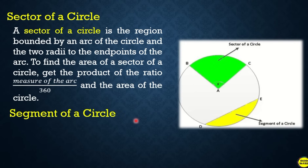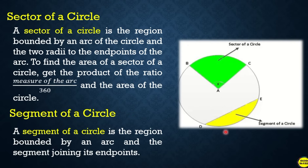A segment of a circle is the region bounded by an arc and the chord joining its endpoints. That is how it differs from a sector of the circle.